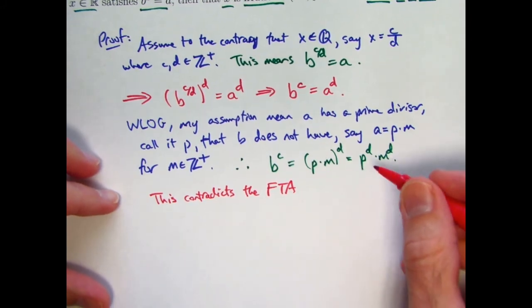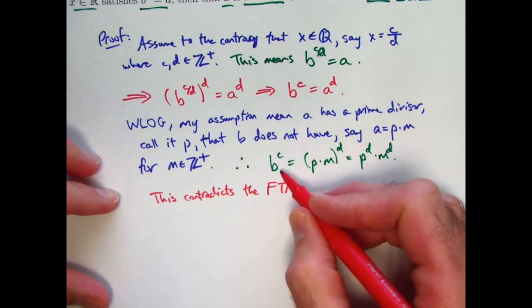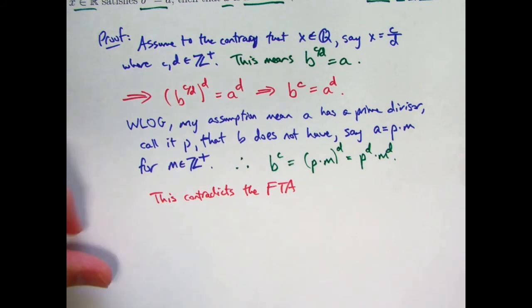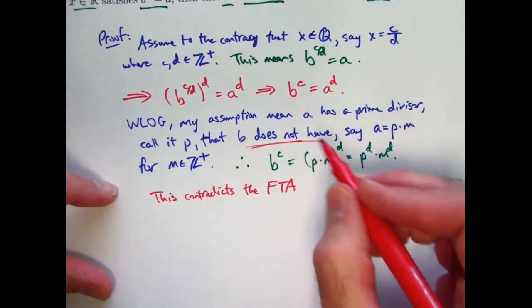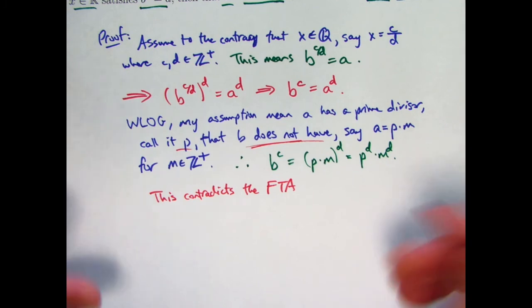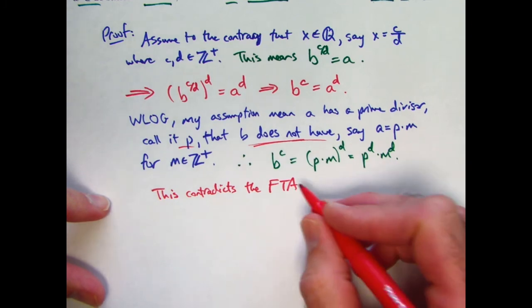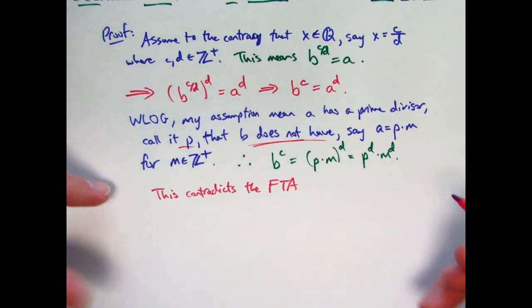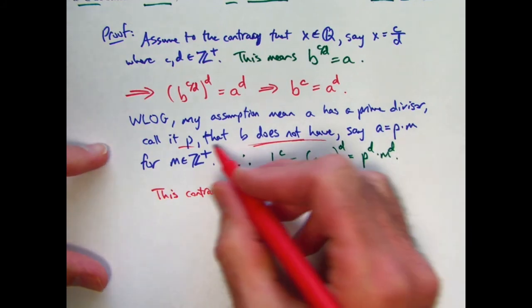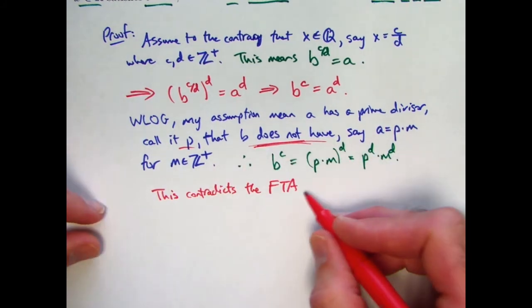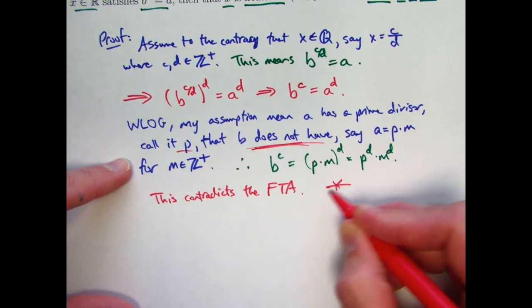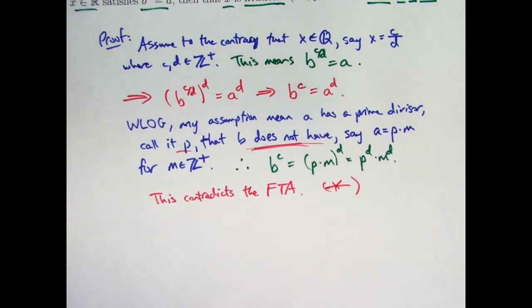Why? Well, it's saying that p is a prime factor of b to the c, which would mean it's a prime factor of b as well. But hey, p is not a prime factor of b. That's a contradiction. Say that again? Well, this equality would mean that p is a prime factor of b to the c. And if it's a prime factor of a positive integer power of b, it's got to be a prime factor of b itself. Think about that. There's no other way it can happen. But I know p is not a prime factor of b. So there's our contradiction. Maybe you want to go ahead and make two arrows pointing at each other. Contradiction.